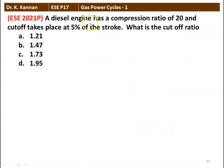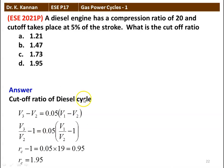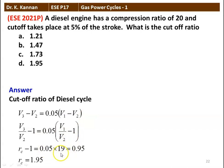The next question: a diesel engine has a compression ratio of 20 and cutoff takes place at 5 percent of the stroke. What is the cutoff ratio? We calculate: V3 minus V2 equals 0.05 into V1 minus V2. Taking V2 outside, RC minus 1 equals 0.05 into 20 minus 1 equals 0.05 into 19 equals 0.95. So the cutoff ratio RC equals 1.95.